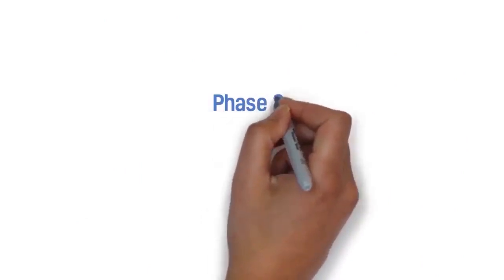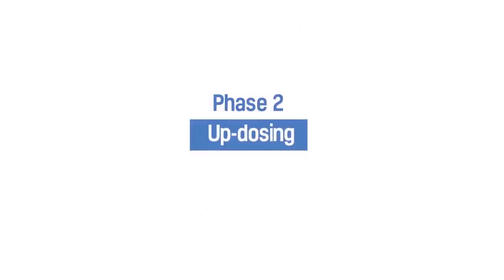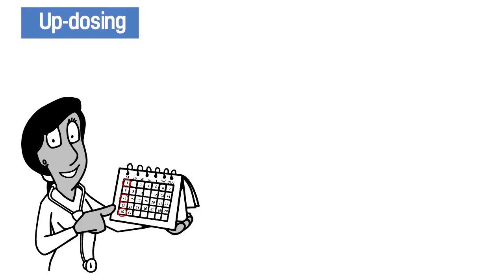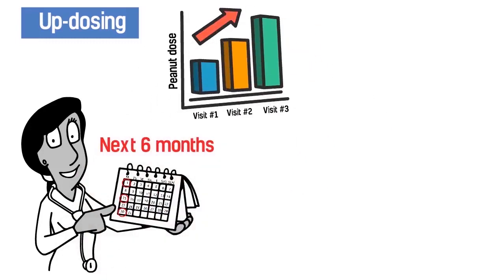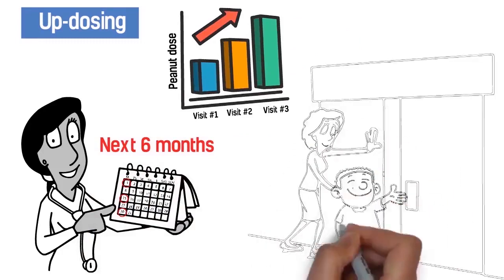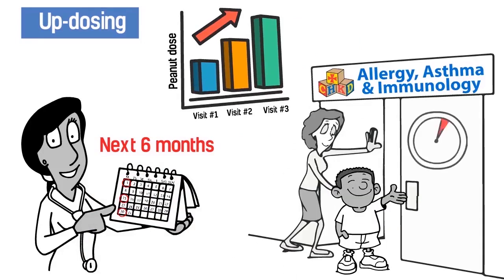Phase 2. Updosing. In this phase, your child will visit our office every two weeks for the next six months. At each visit, your child will updose or receive a new, slightly higher dose of the medication. Each visit will take about one hour.